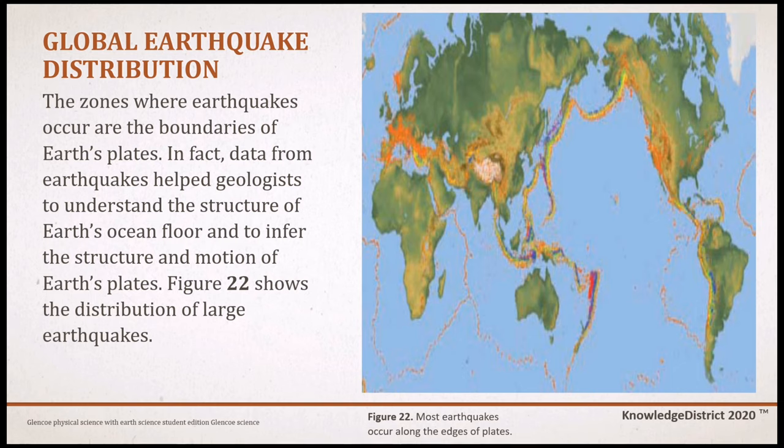Scientists have known that earthquakes are not distributed randomly. Instead, they usually occur in well-defined zones — the boundaries of Earth's plates. In fact, data from earthquakes help geologists understand the structure of Earth's ocean floor and infer the structure and motion of Earth's plates. Figure 22 shows the distribution of these large earthquakes.